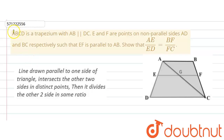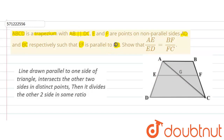The given question says that ABCD is a trapezium and the two sides AB and DC are parallel to each other. So ABCD is a trapezium where AB is parallel to DC. E and F are two points on the non-parallel sides AD and BC respectively, such that EF is parallel to AB. We are required to show that AE divided by ED is equal to BF divided by FC.